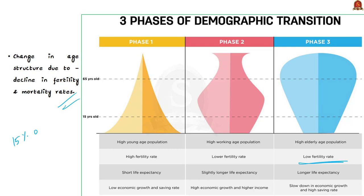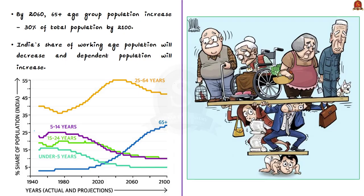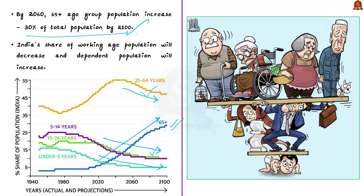Looking at India's first graph, it shows the percentage of population by age group from the 1950s to projections for 2100. The yellow and green lines indicating working age population show a declining trend after 2060. A blue line representing the 65+ age group is projected to increase tremendously, constituting 30% of total population by 2100. So India's working age population share will decrease while the dependent population share will increase.